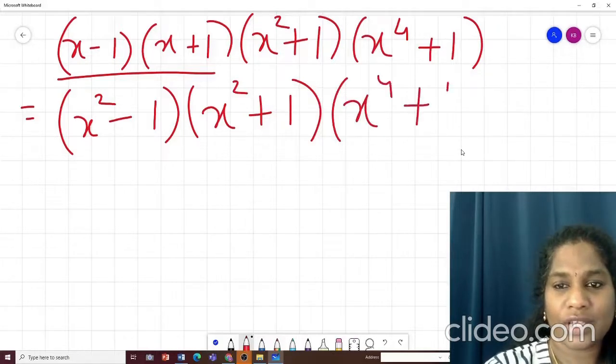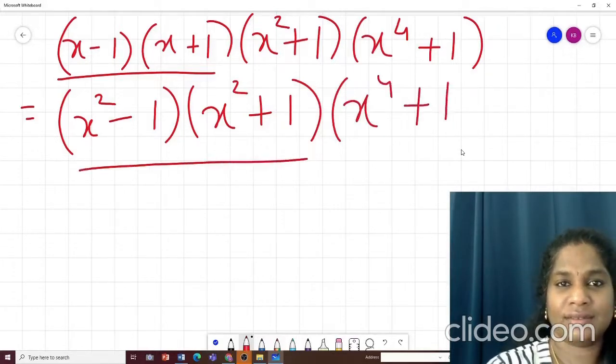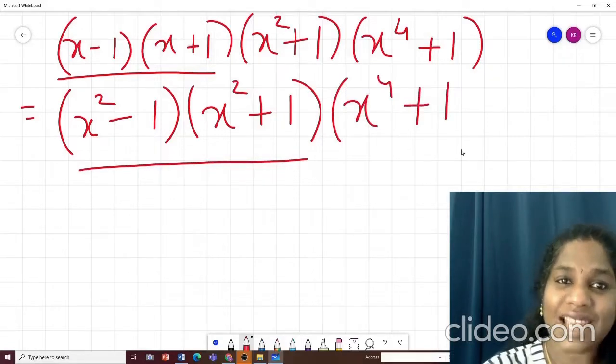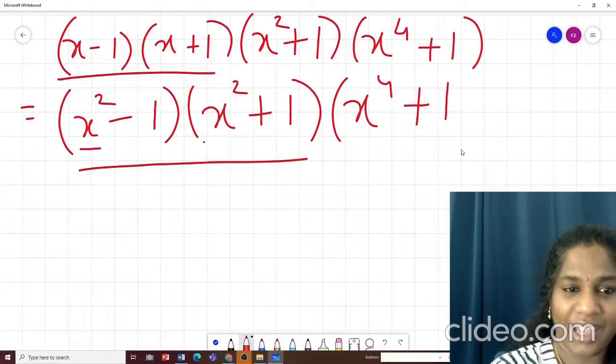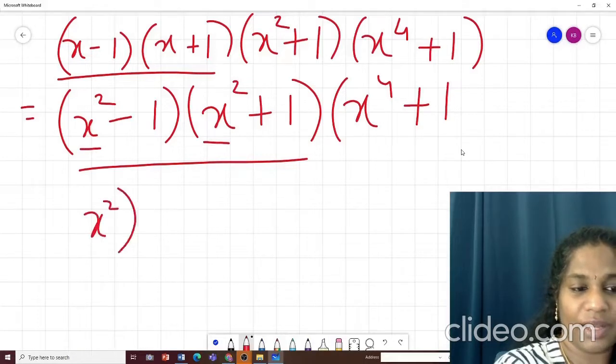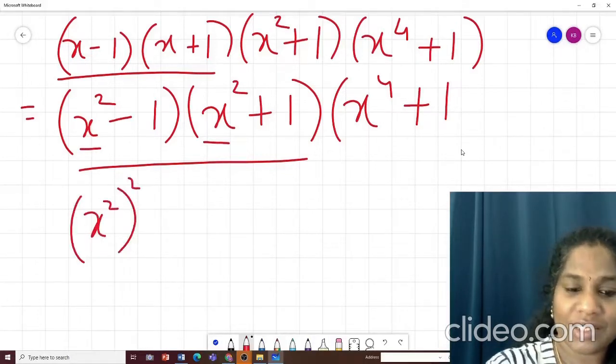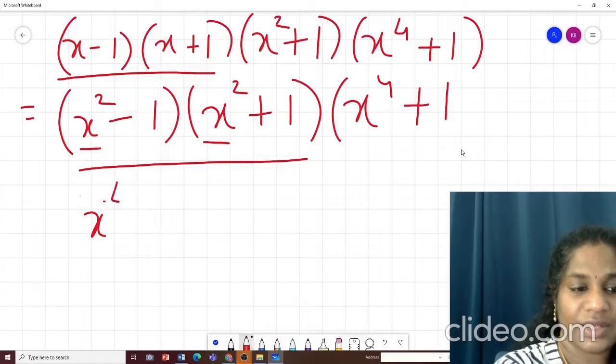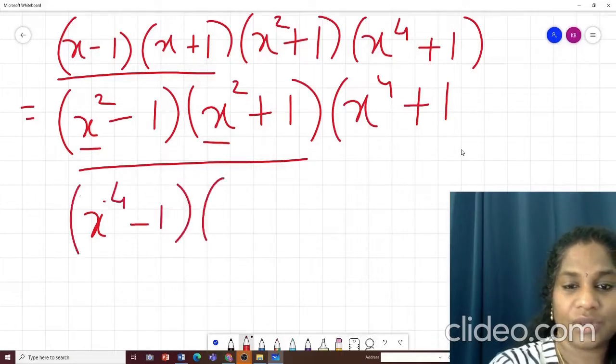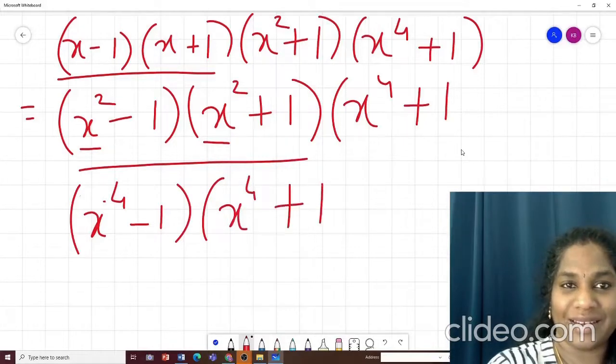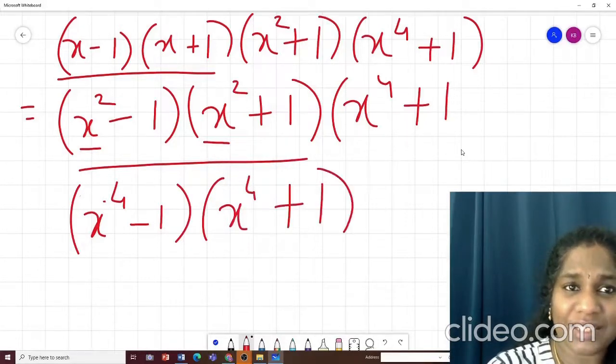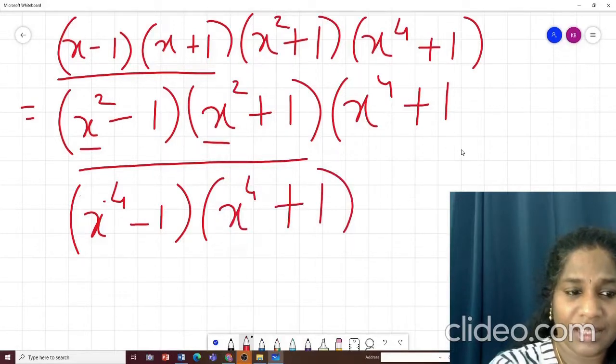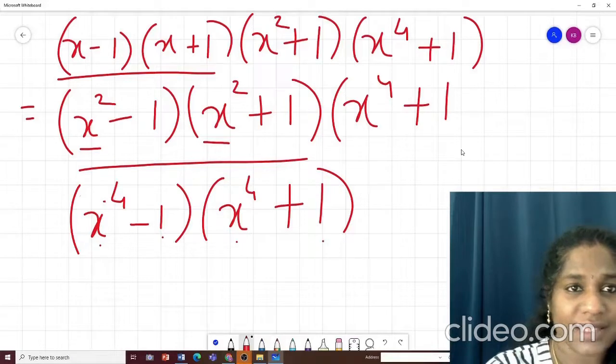So this I will put in a bracket and next step it becomes like this. Now what we will do? Again do I sense the same identity here? Here my a is x square. So a square will become square of this. That means it will become x raised to 4. So I can write x raised to 4 minus 1 into x raised to 4 plus 1. Now again do you see the same pattern? a minus b and a plus b. This is my a, this is my b, only the signs are different. So again it will be a square minus b square.